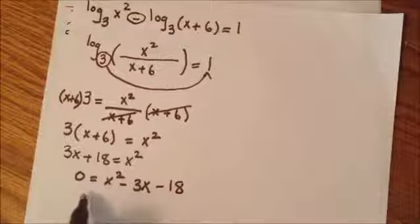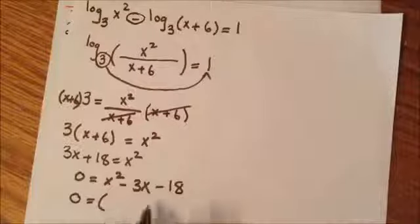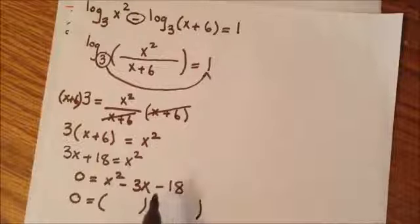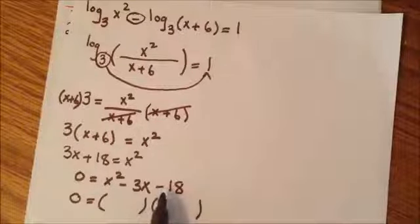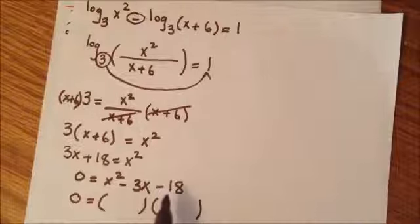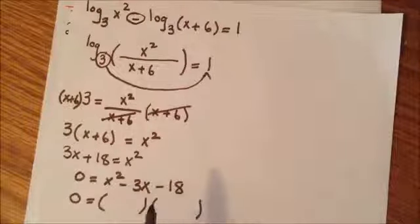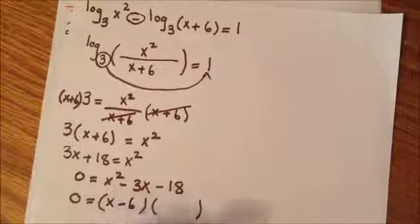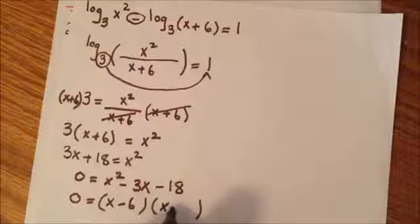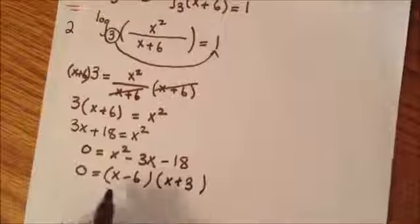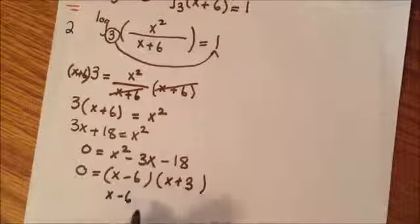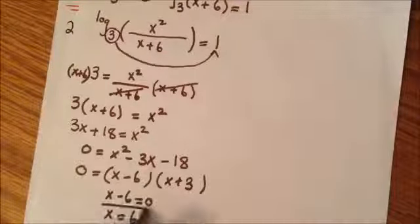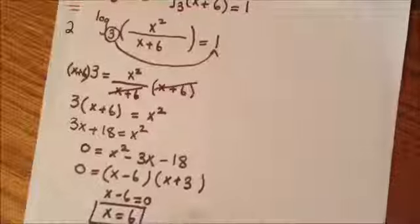I'm going to have my parentheses. Since we have a negative 18 here, it's going to be 6 and 3. Since the biggest number is negative, we're going to use negative for 6, so it's going to be x minus 6, x plus 3. From here, we're going to have x minus 6 equals 0, and x is going to be positive 6—that's going to be one of our solutions. The other solution is x plus 3 equals 0, so we're going to get x equals negative 3.